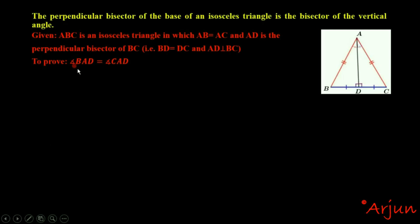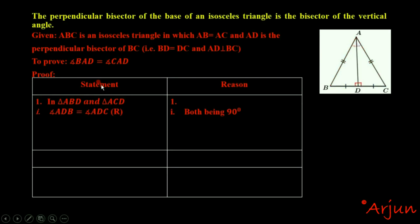In this theorem, angle BAD is equals to angle CAD — BAD is equals to CAD — by the angle bisector. And I'm going to do the proof. So in the table of statements and reasons, when you consider triangle BAD or CAD, it will be that the triangles are congruent.